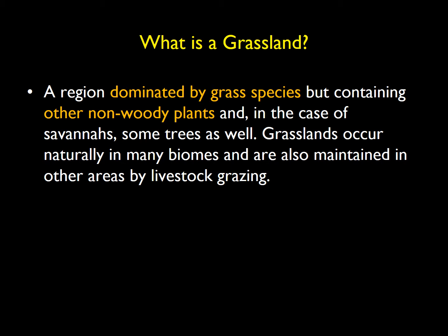They occur naturally in lots of places around the world. But these ecosystems are driven largely by disturbance regime — in particular, grazing plays a large part of that. There are areas of the world where livestock grazing maintains ecosystems in a grassland condition that would normally move toward more of a woody, vegetation-dominated biome if succession was allowed to progress along its natural trajectory.